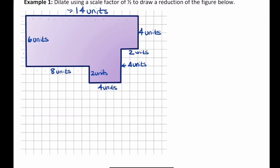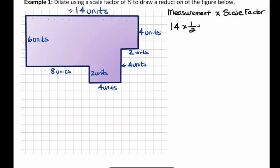The largest measurement is 14 units and the smallest is 2 units. Next, we're going to take each and every one of those measurements and multiply them by the scale factor: measurement times scale factor. So we're going to do 14 times one-half, 4 times one-half, 2 times one-half, 8 times one-half, and I have a 6 as well.